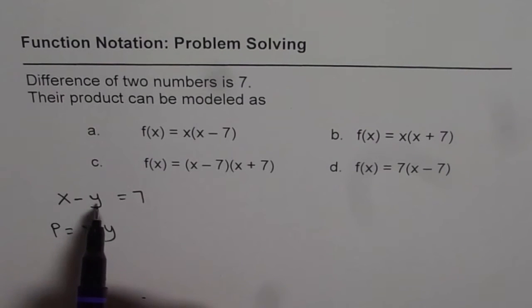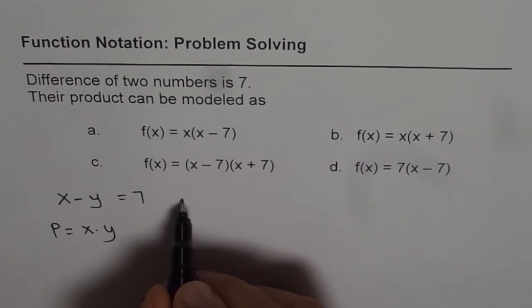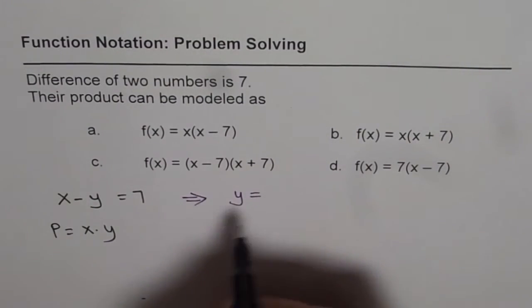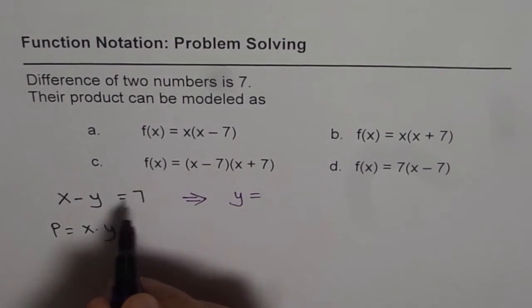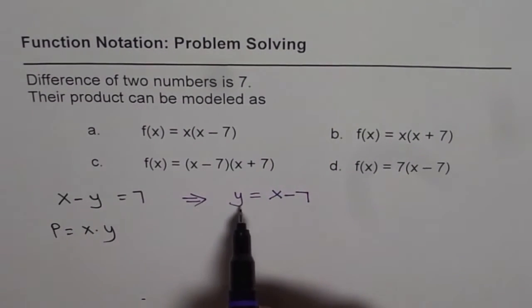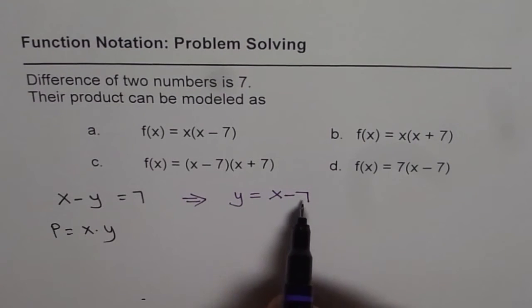So what we can do, we can write what y is equal to from the first equation. So this first equation gives us, y equals to, so if we bring y on this side, it is x minus 7. So y equals to x minus 7.